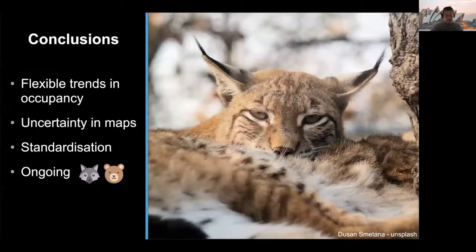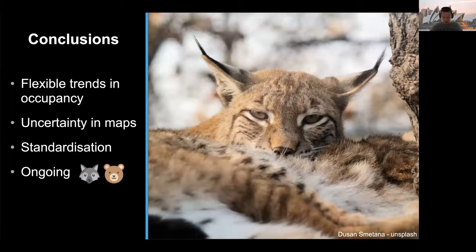In conclusion, our approach is flexible to model trends in occupancy. We can easily get maps of uncertainty because we went fully Bayesian. Overall, this approach provides a way to standardize the production of ecological indicators. We are currently exploring its applications to other large carnivores, wolves and bears in particular.